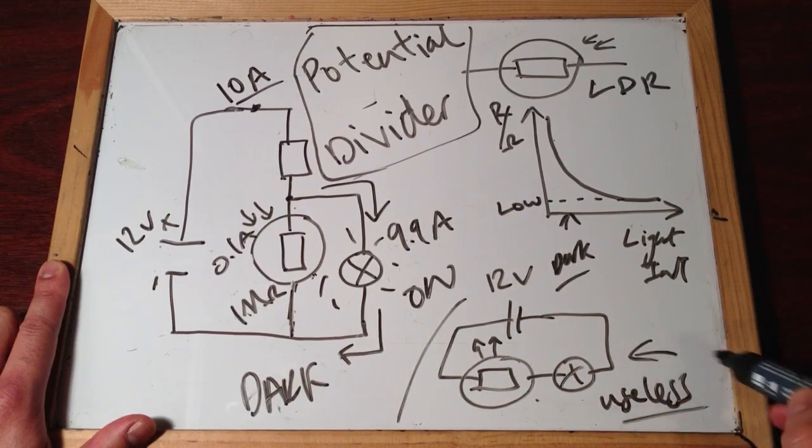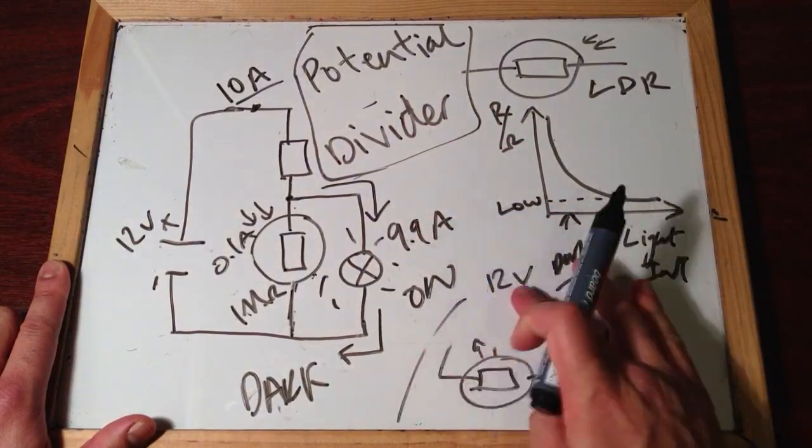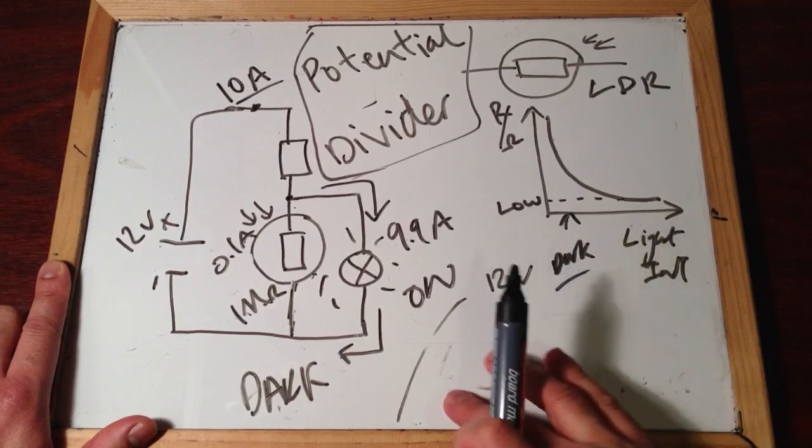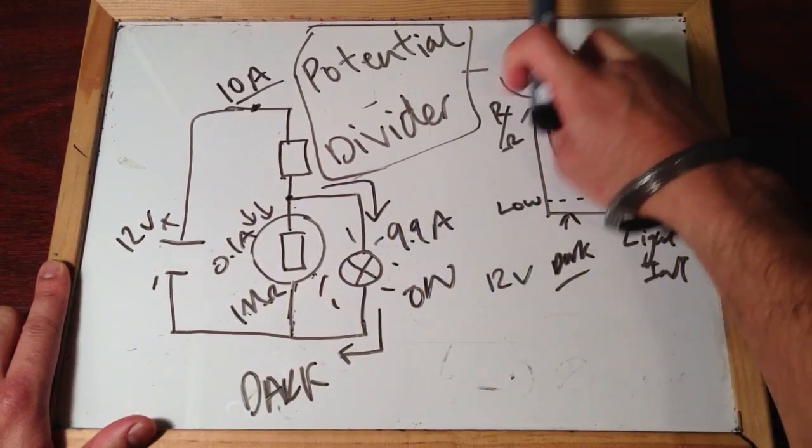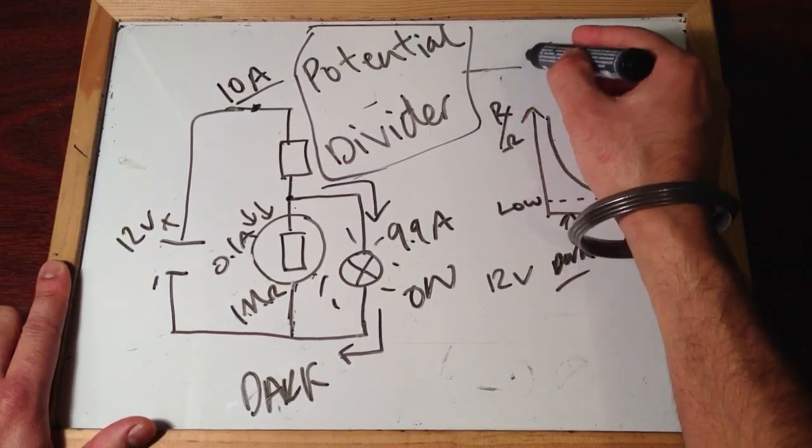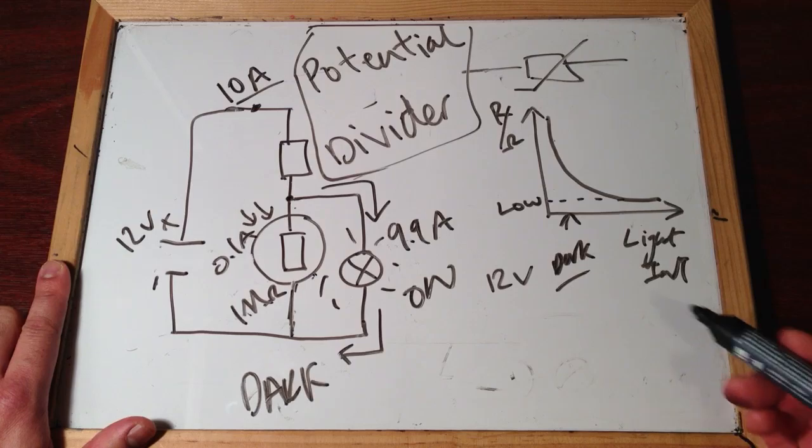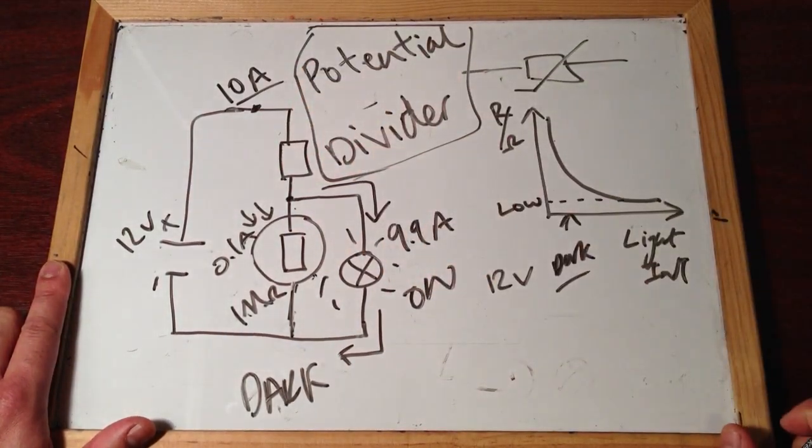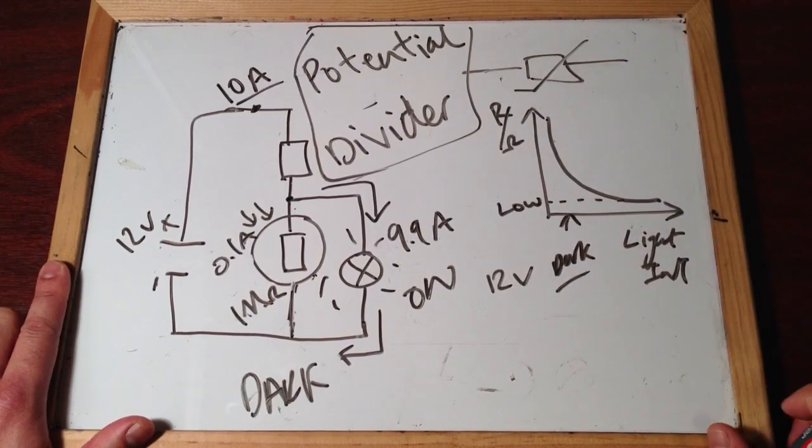You have to use the potential divider setup. And this is kind of the same if we are using a thermistor. So, we could change the LDR for a thermistor. If you remember what a thermistor does, as the heat increases, the resistance of the thermistor decreases. So, I could put a thermistor in here, and it would act in the same way, to turn appliances on when the resistance of the thermistor was really high.